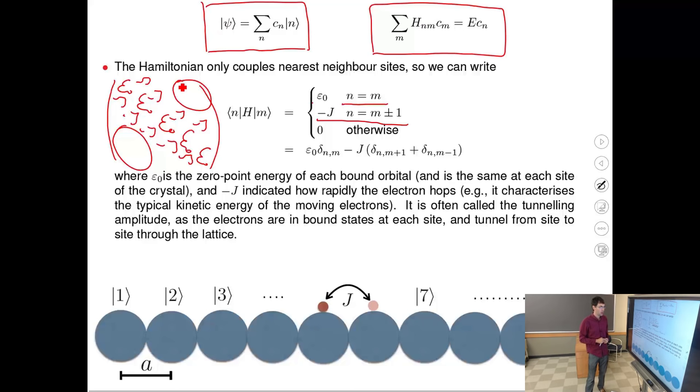We could diagonalize this matrix directly, but instead we are going to use an ansatz — suppose what the wave function actually looks like.